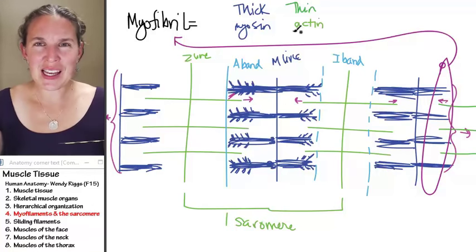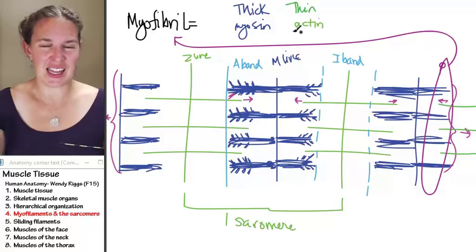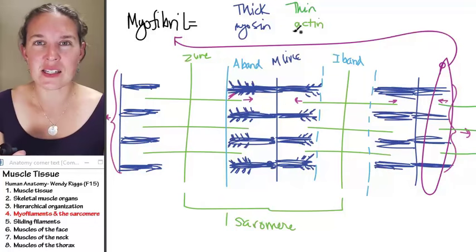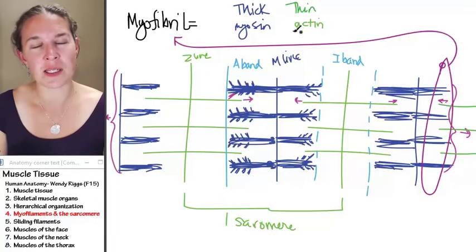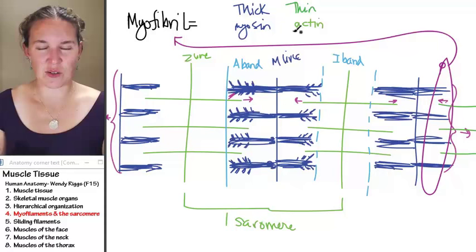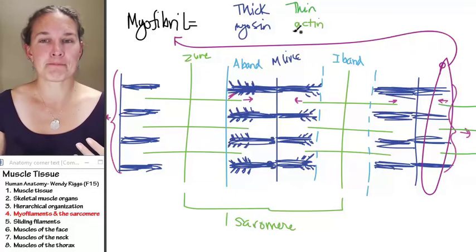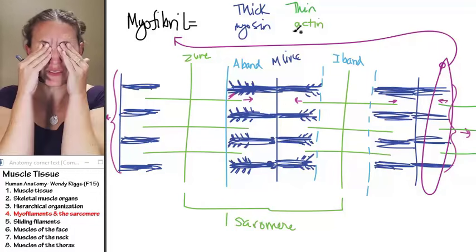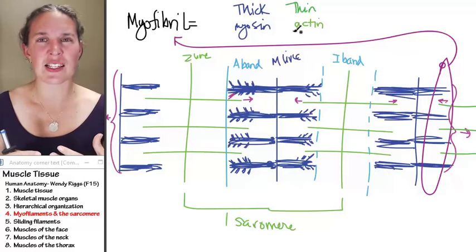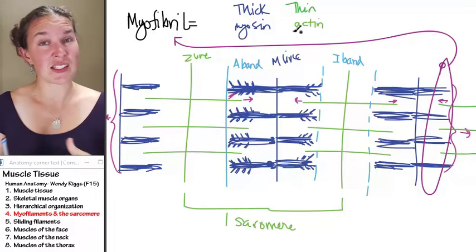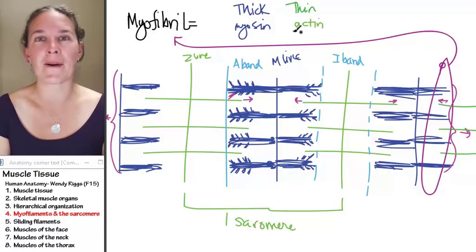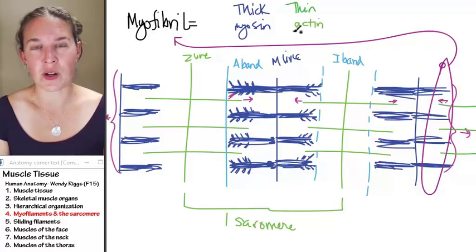A sarcomere isn't a thing - it's an appearance that happens because of how the myofilaments are stacked together. I understand that's really conceptual and challenging to visualize. It's happening at a cellular level, so you can't actually see the sarcomere.